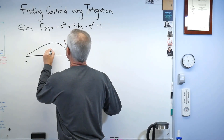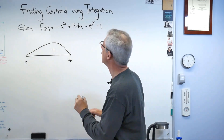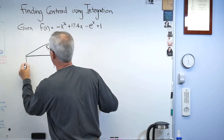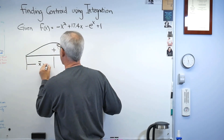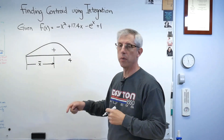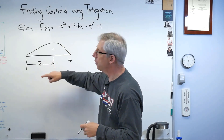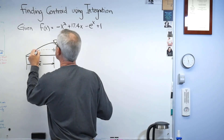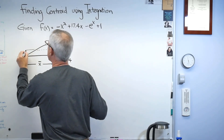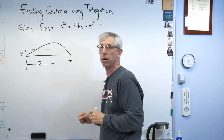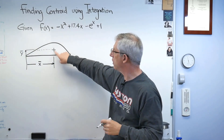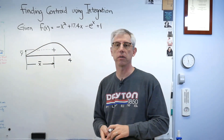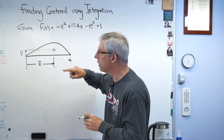Let's say the centroid is about here. That horizontal distance we'll call x-bar, and that overbar usually means average. When you're figuring out a centroid, there's an averaging operation, so that makes sense. That vertical distance would be y-bar. So that's where the centroid of this shape is — if I cut it out of a piece of plywood and put my finger under it, that's where it would balance.